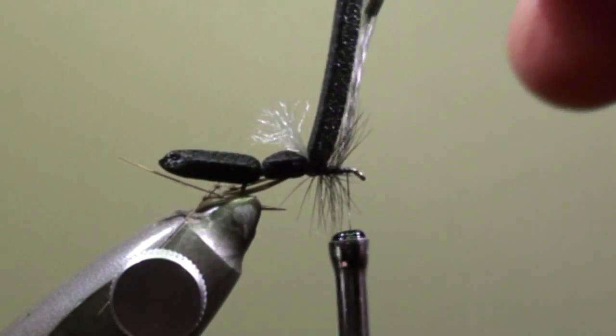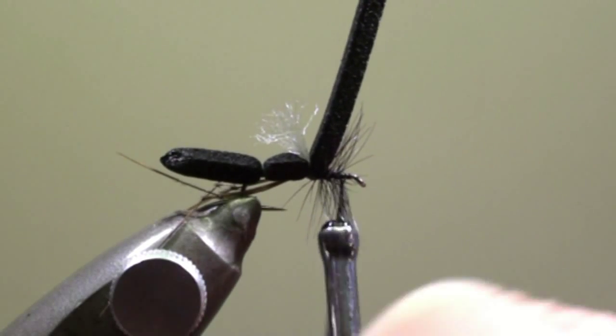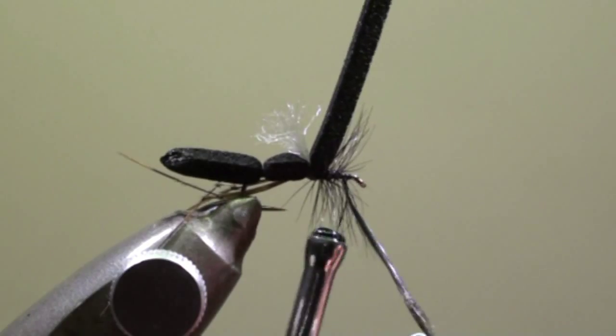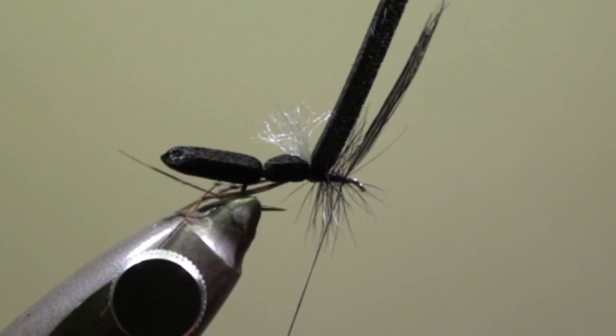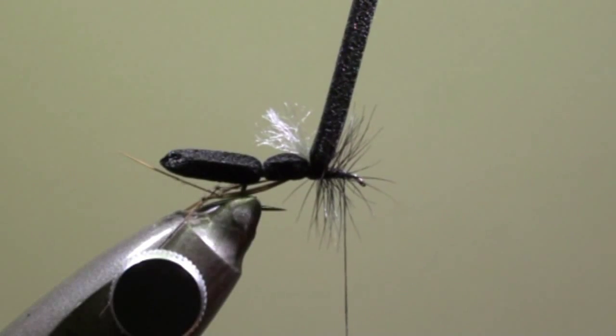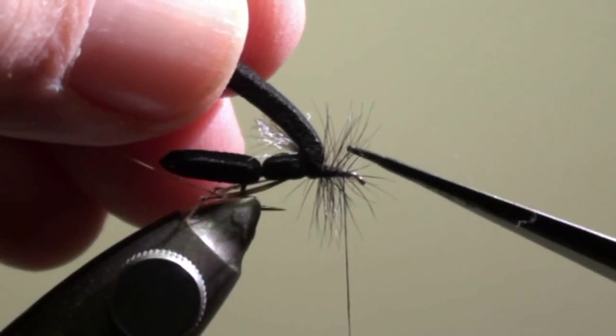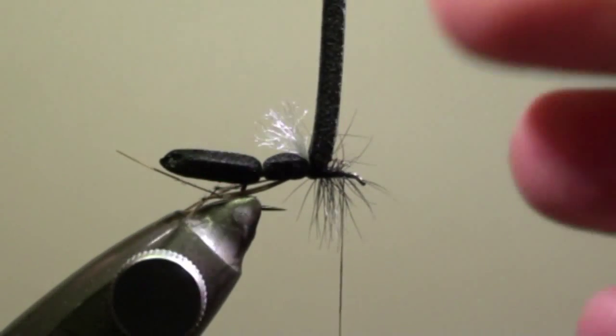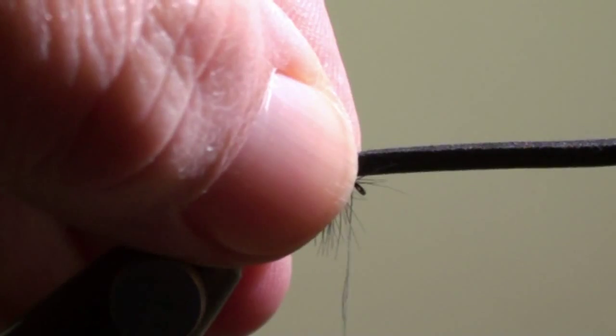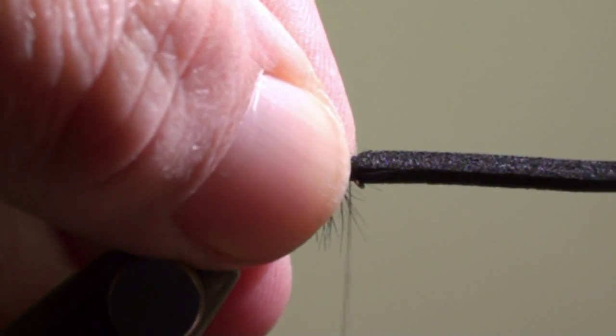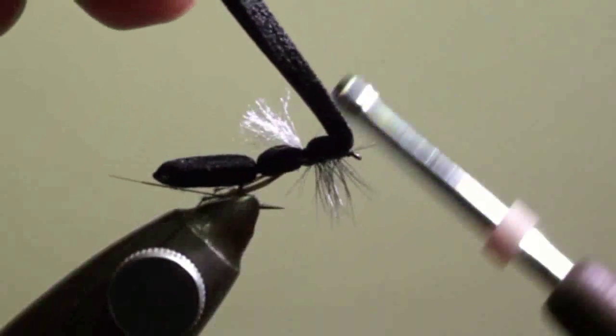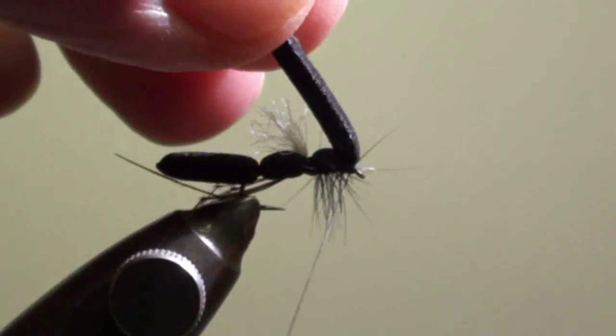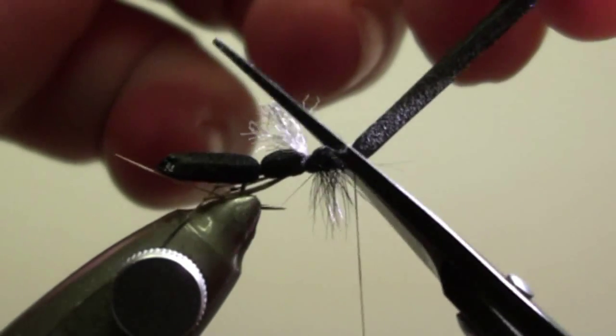Then we will tie off the cock feather and tear off the excess. We are going to cut off the fiber tips that are on the upper side of the hook shank, flip the foam to the eye of the hook and tie it in directly behind the eye of the hook. Make a few turns behind the eye of the hook and cut off the foam strip.